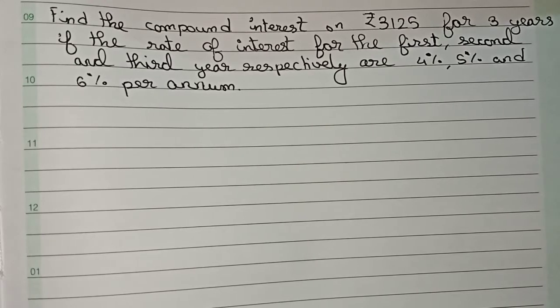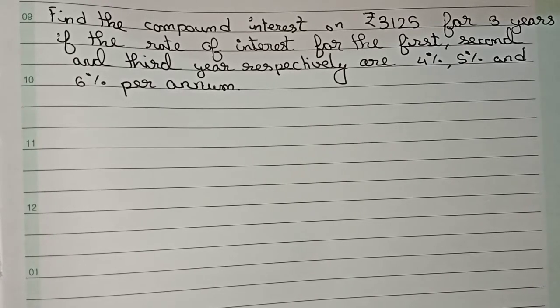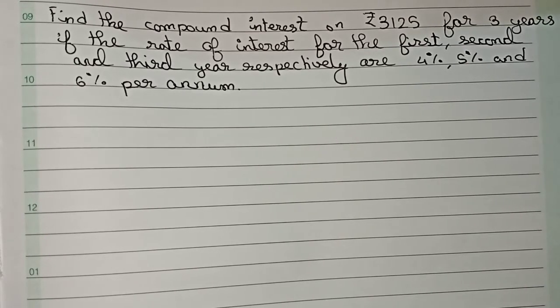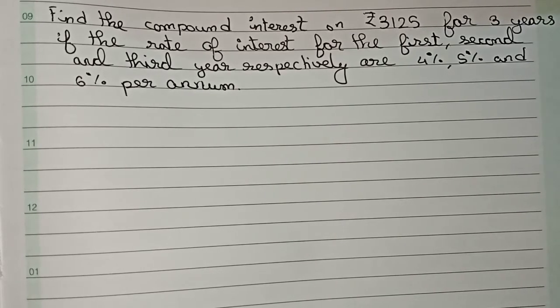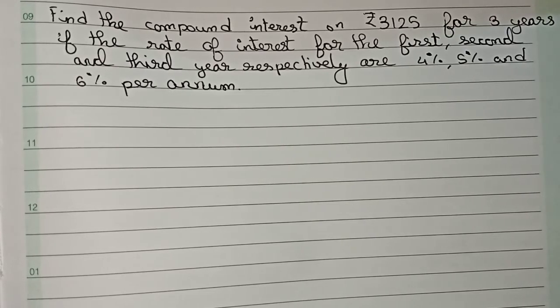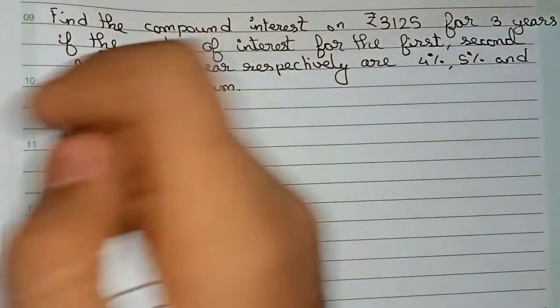Hello guys, welcome to this video. In this video, the question is find the compound interest on rupees 3125 for three years if the rate of interest for the first, second, and third year respectively are four percent, five percent, and six percent per annum. This is the question.